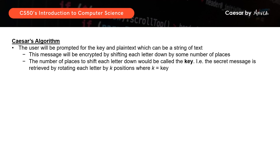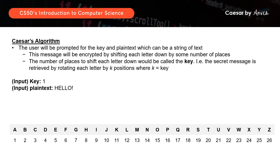For example, if the user inputs the key as 1 and the plain text as 'hello', let's see how to get the ciphertext. We'll look at the position of each letter of the word 'hello' in the alphabet: H is the 8th letter, E is the 5th letter, L is the 12th letter, and O is the 15th letter.